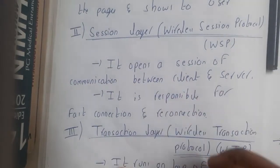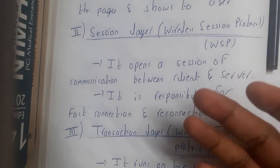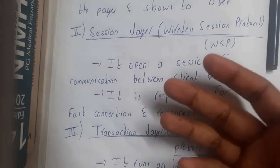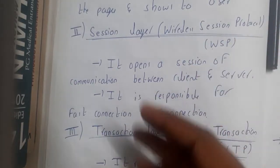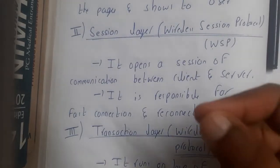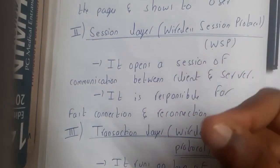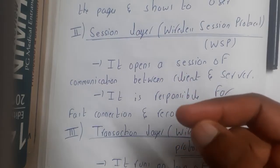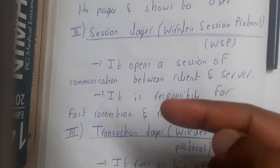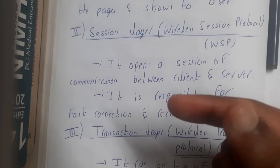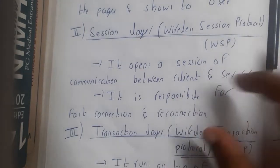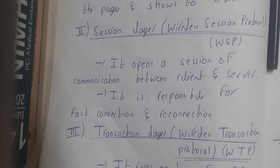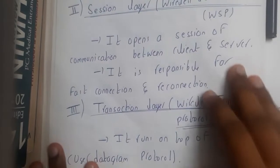If you are visiting a website frequently, access will be faster due to the session layer. This relates to Domain Name Servers, where domain names and their IP addresses are stored — either in your system or your service provider's database. When the service provider recognizes a website name in its database, it automatically maps the IP address and loads the website. So with frequent use, access time is faster and reconnection after any disconnection is also fast.